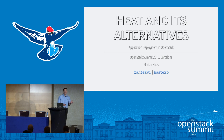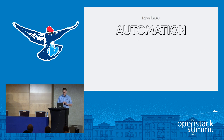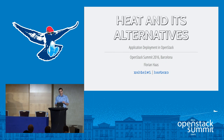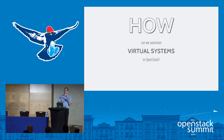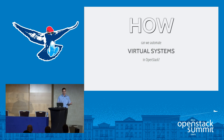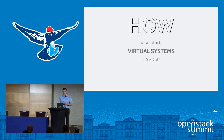We'll talk about HEAT and its alternatives for application deployment in OpenStack. I want to talk specifically about automation of virtual systems — how we can automate virtual systems in OpenStack. This is distinct from the question of how we can use automation facilities to deploy OpenStack itself. Here we're going to talk about how we can deploy arbitrarily complex virtual systems using OpenStack resources in an automated fashion.